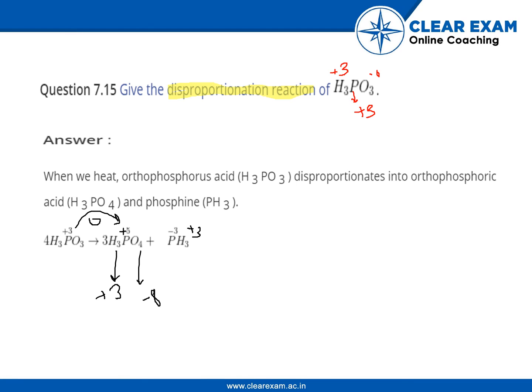In PH3, hydrogen has plus three, so phosphorus will have minus three. Here phosphorus undergoes reduction.